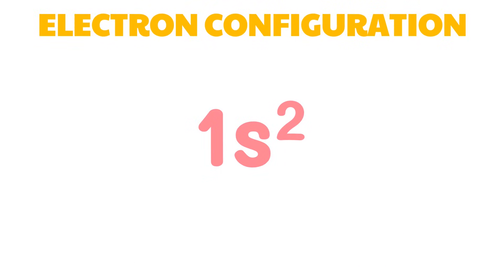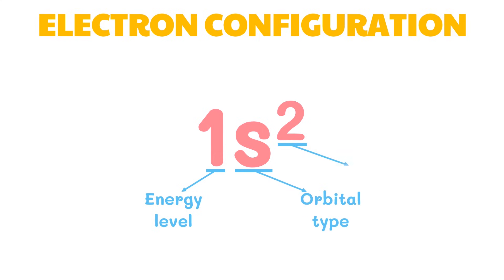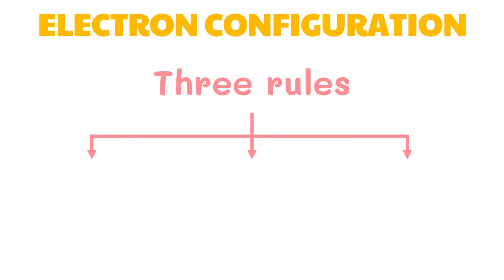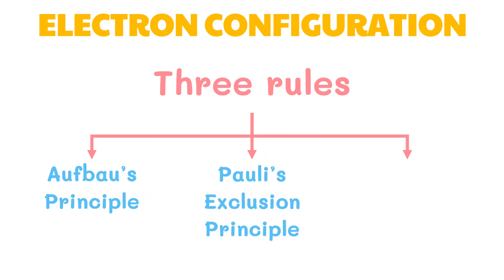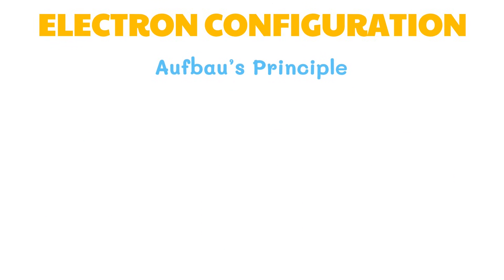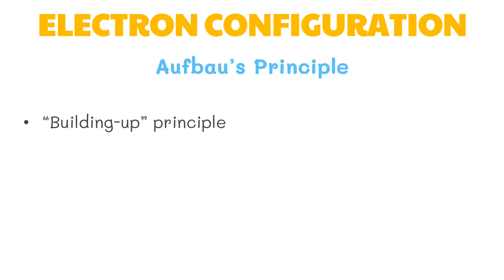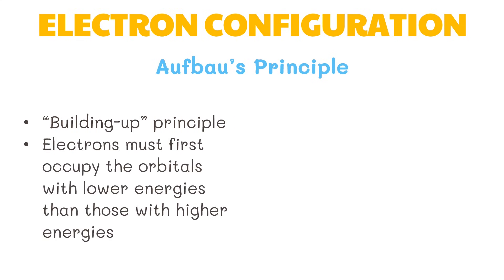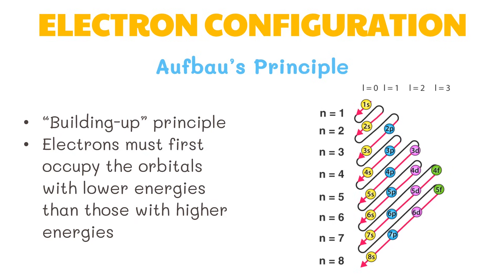In the electron configuration notation of 1s², '1' refers to the main energy level occupied by the electron, 's' denotes the kind of orbital, and the superscript '2' refers to the number of electrons in the orbital. The main energy level also tells us the number of sublevels, and the name of the sublevel is the same as the name of the orbital. Three rules are applied in deriving the electron configuration: Aufbau's principle, Pauli's exclusion principle, and Hund's rule of multiplicity. Aufbau's principle, also known as the building-up principle, states that electrons must first occupy the orbitals with lower energies before those with higher energies, following a specific pattern or sequence in filling up the orbitals.